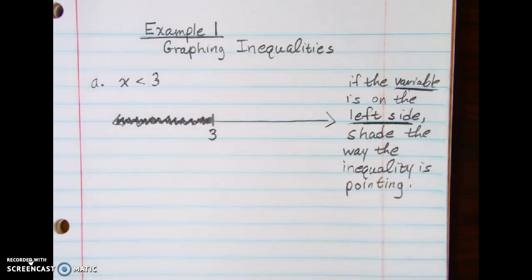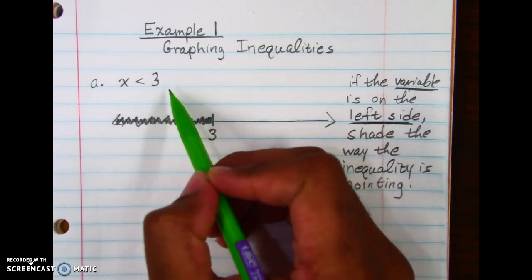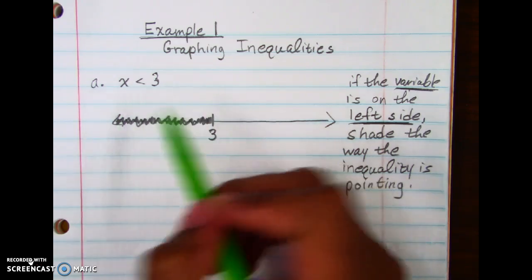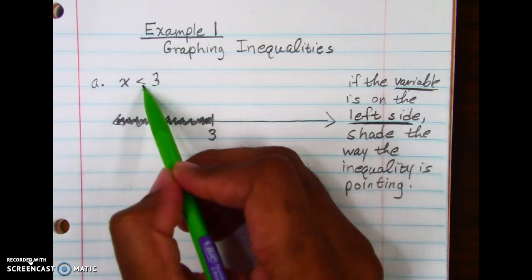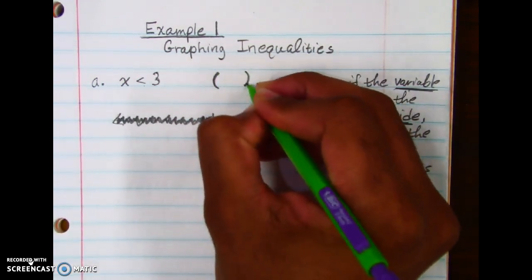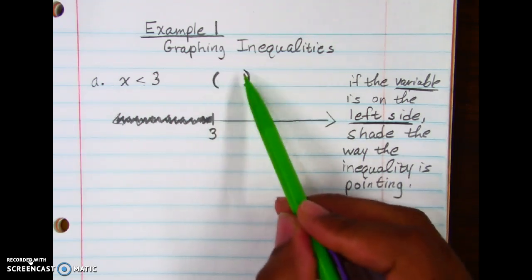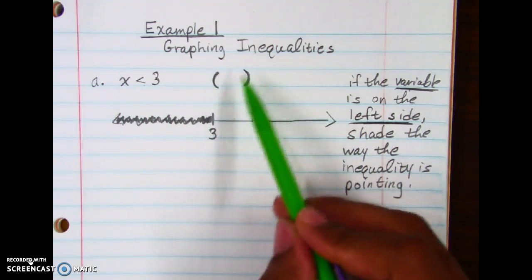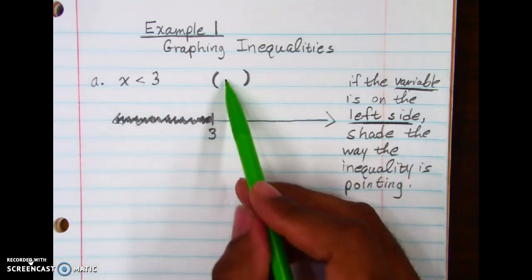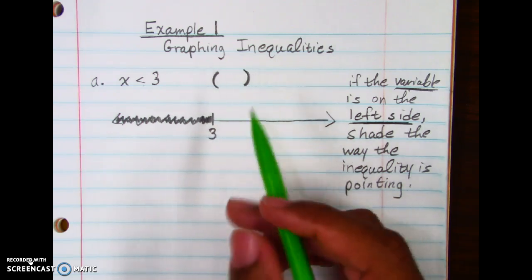Now the other part — as we discussed previously — instead of open and closed circles, we use parentheses and brackets. Since this is just a less-than sign with no equal-to, we use parentheses. Think of these as the inside of a cup: if you pour water into the cup, that makes sense — that's what you do so you can drink it.